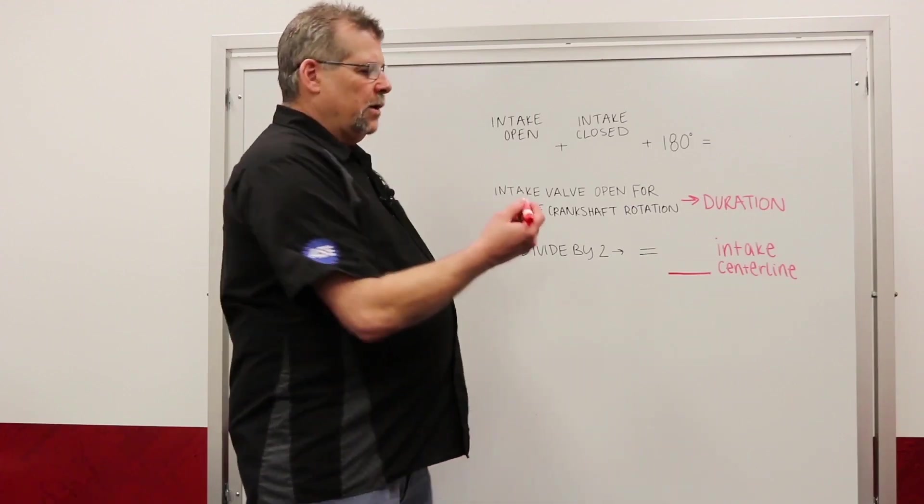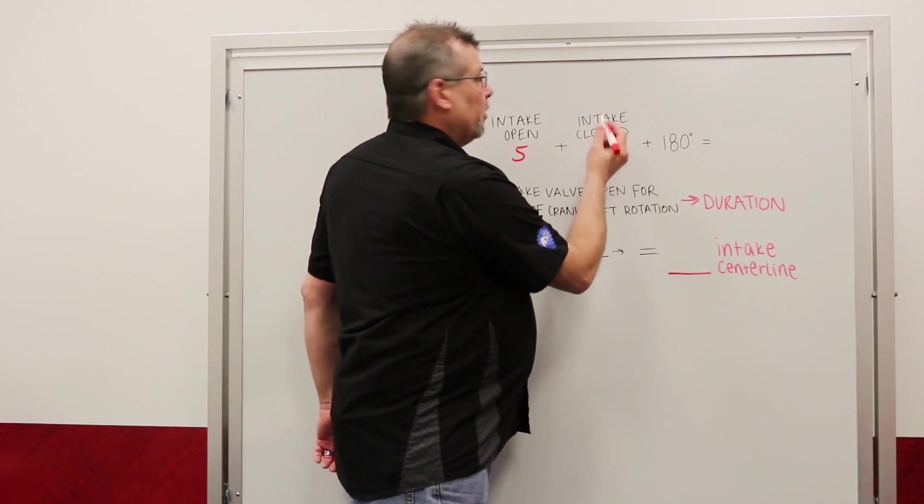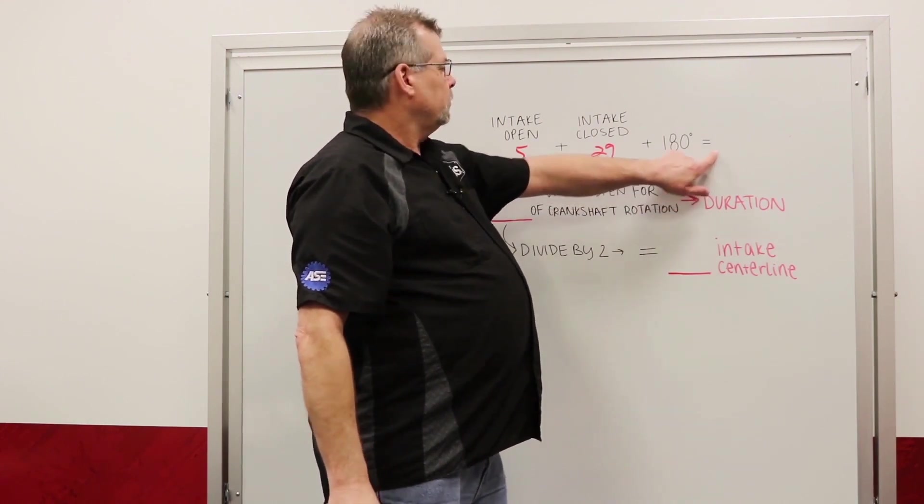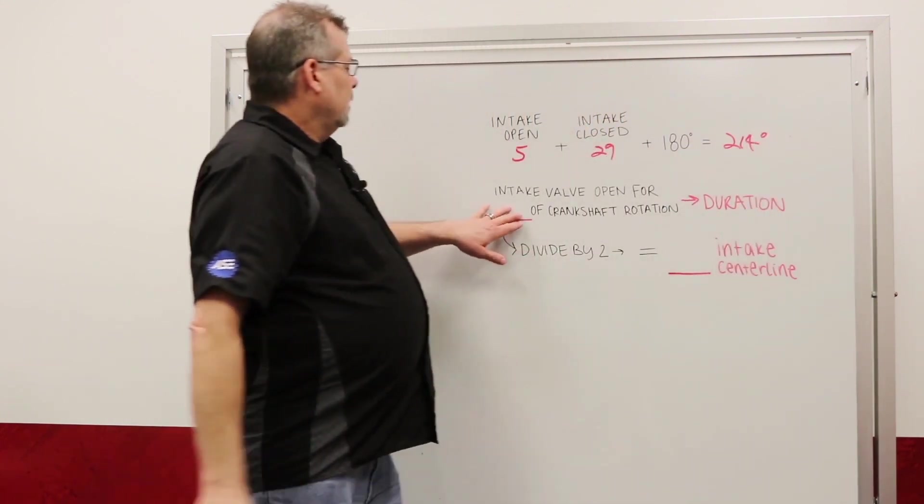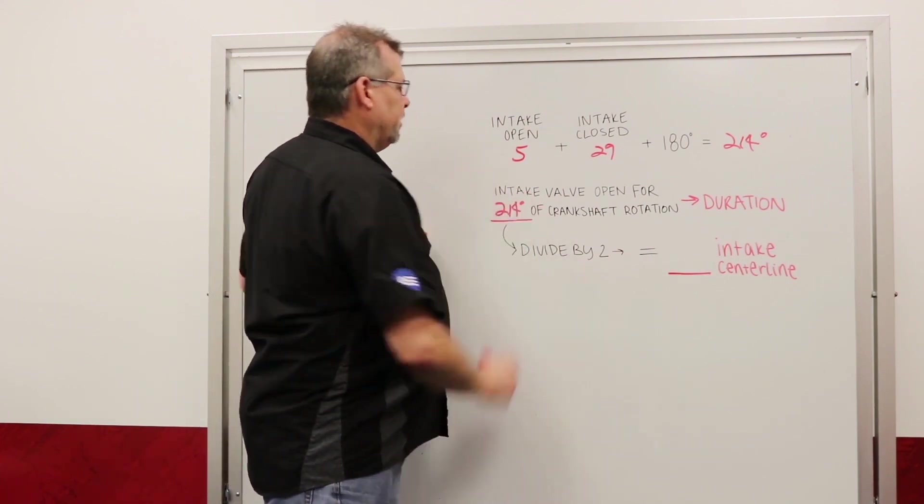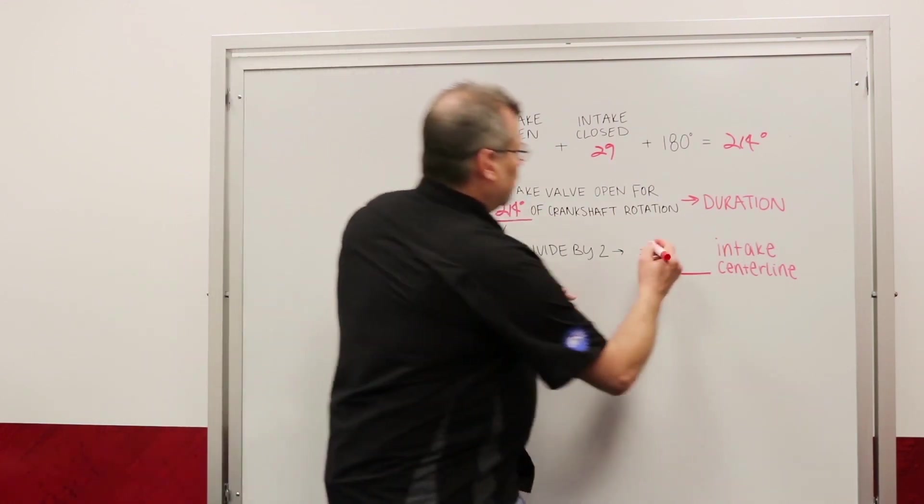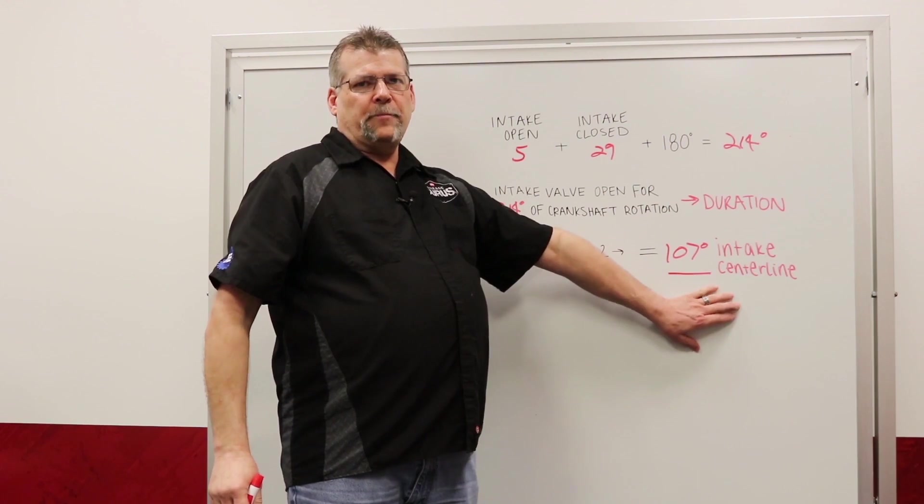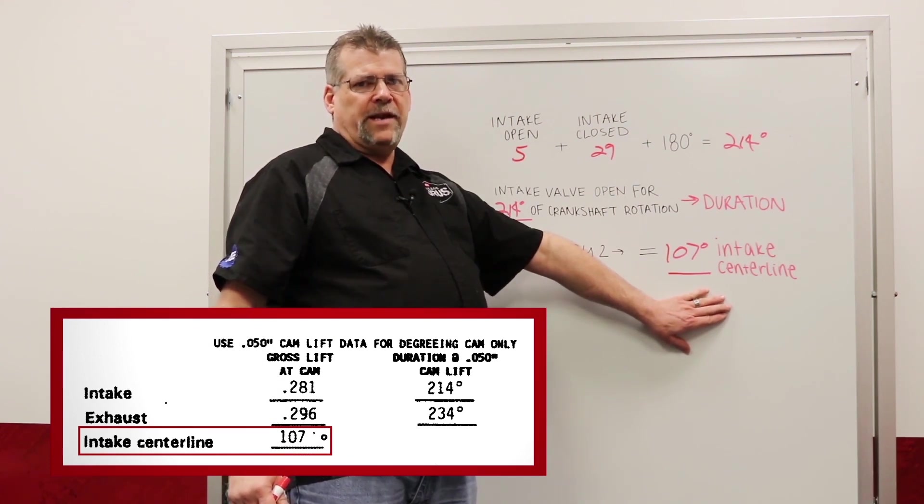Now we can do our math. We're going to take our five degrees that was recorded earlier for our intake open event. We're going to add our intake closed event at 29 degrees plus 180 degrees on the wheel, which equals 214 degrees. The intake valve is open for 214 degrees of crankshaft rotation. This is our duration number. Now we're going to divide that number by two, which equals 107 degrees. This is our intake center line. This proves that our camshaft is ground correctly to match the card at 107 degree intake center line.